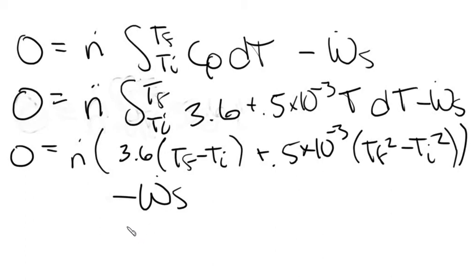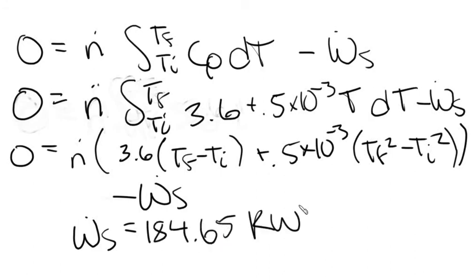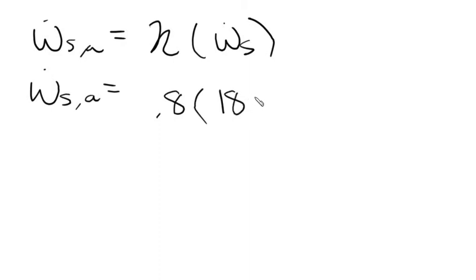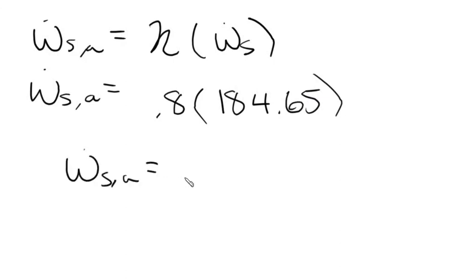Solving that equation gives W_s = 184.65 kW. Remember this value is the power — work per unit time — which is what Part A asks for. Part B asks for actual power with 80% isentropic efficiency: actual power = efficiency × maximum power = 0.8 × 184.65 = 147.72 kW.